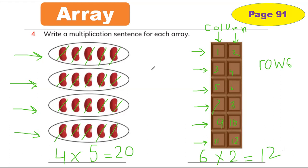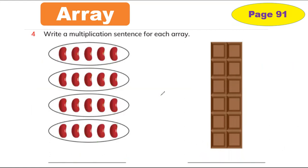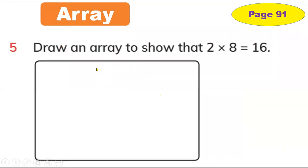I hope you understand, guys. Array — we use the rows and columns to multiply. It's easier than addition. So you understand how to multiply. Now it's time to go to question number five.